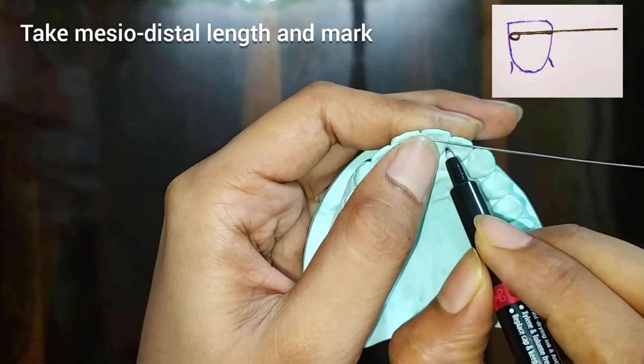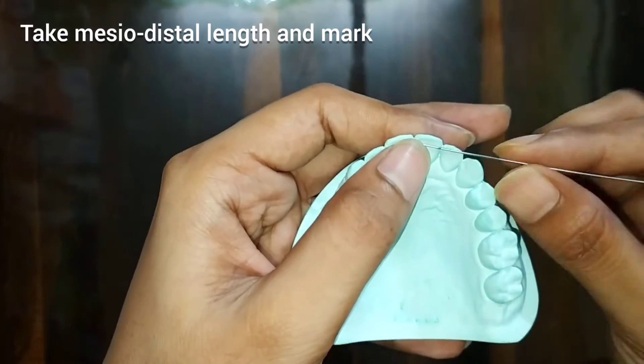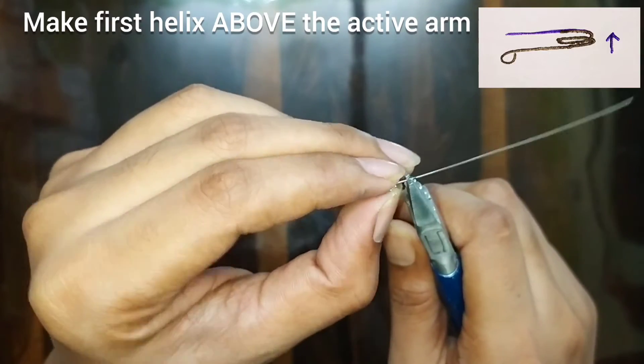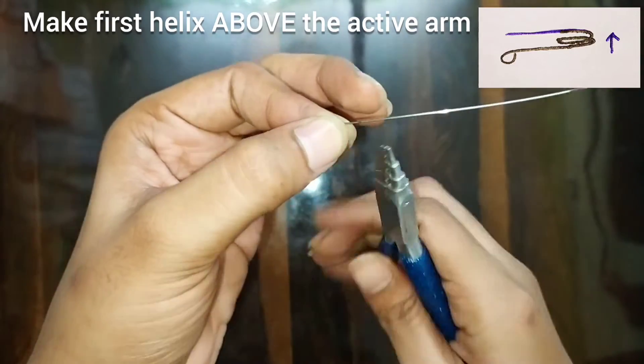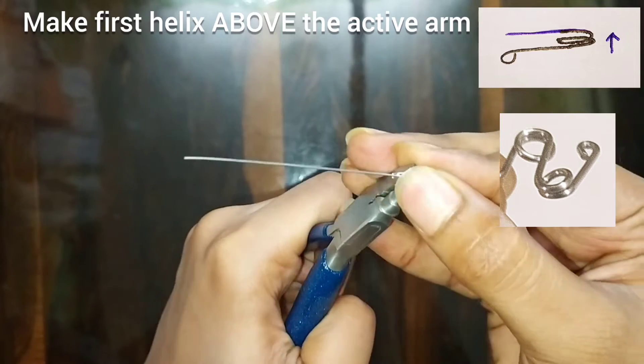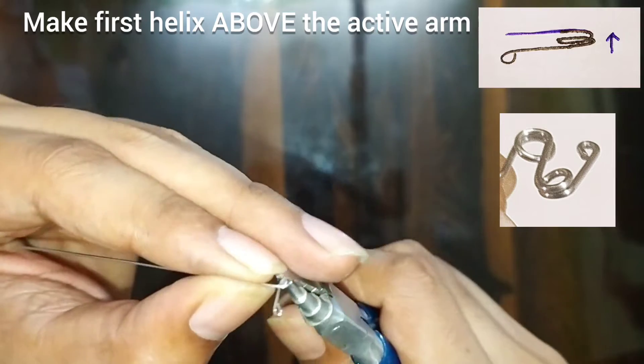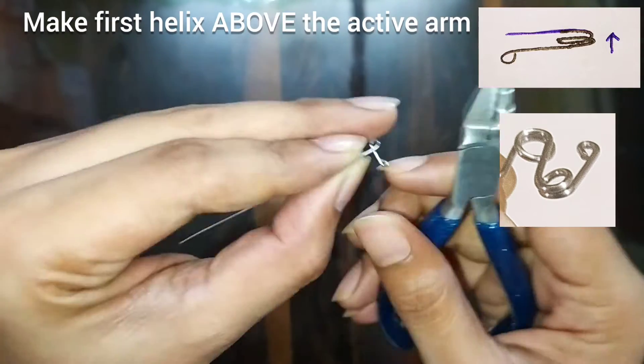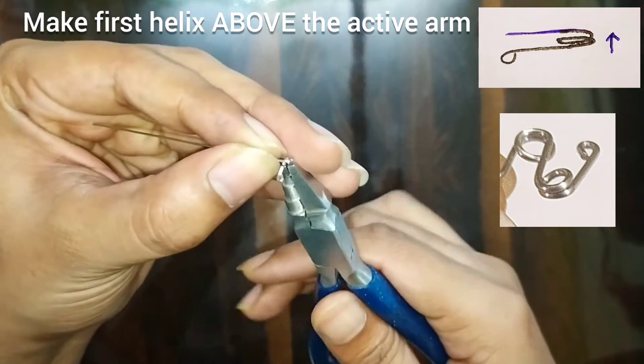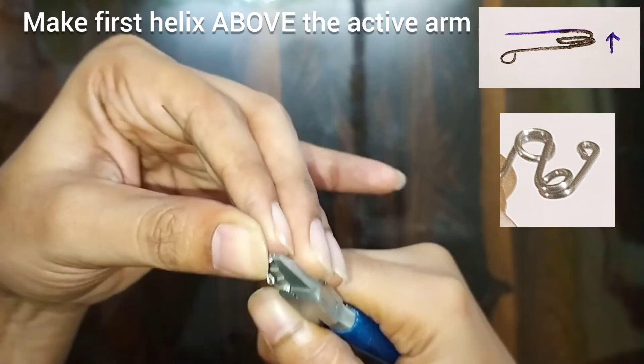Here we will do the marking for the helix. It should not exceed beyond the dimensions of the tooth. Hold the wire tightly at the tip of the Adam's plier. Here we are making the helix. The helix should be above the active arm. You can see here in the figure. Just give one complete turn and bring the wire parallel to the active arm.